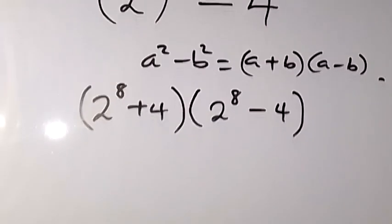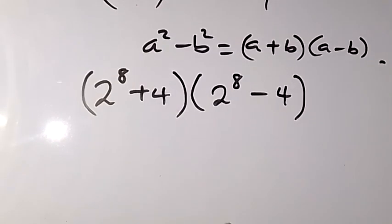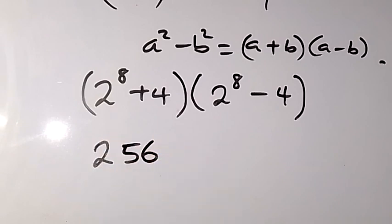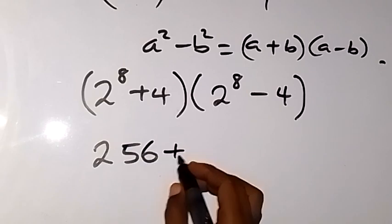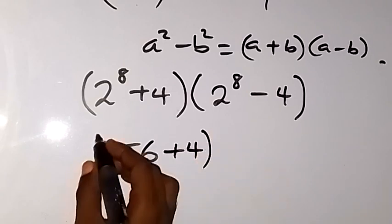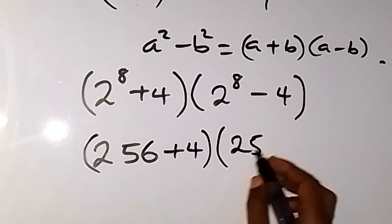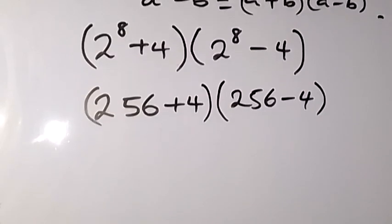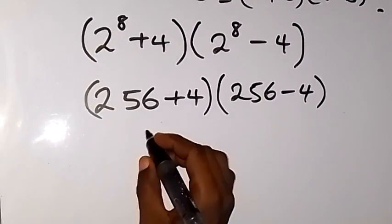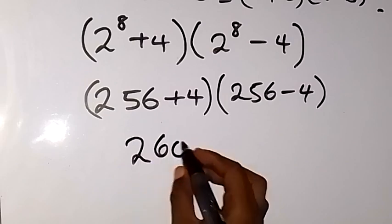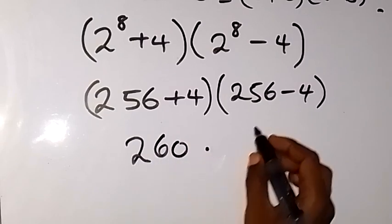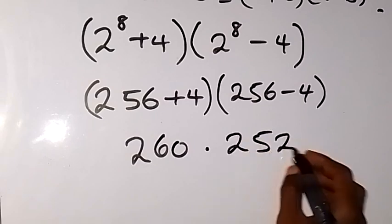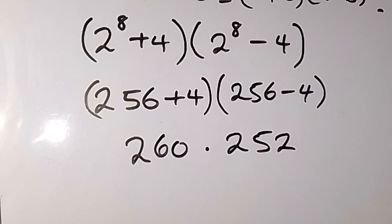We can write 2 raised to power 8 as 256 — that's 2 multiplied 8 times. So we have 256 plus 4, and also 256 minus 4. Adding and subtracting gives us 260 multiplied by 252.